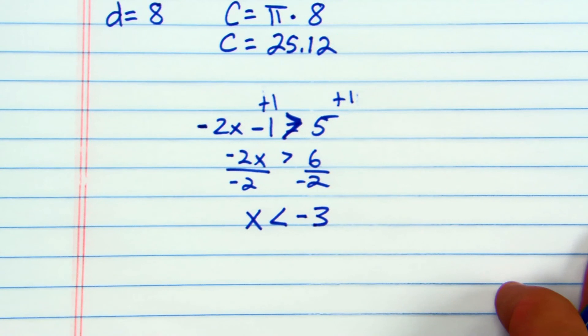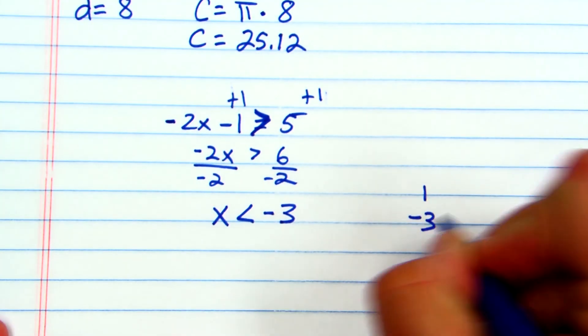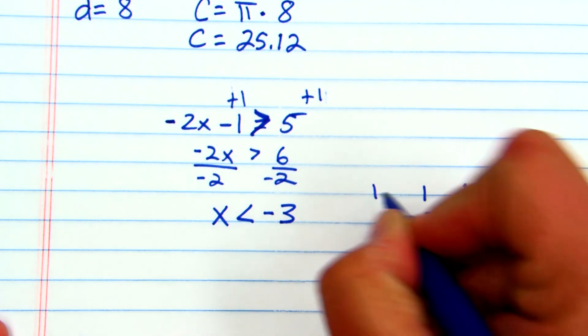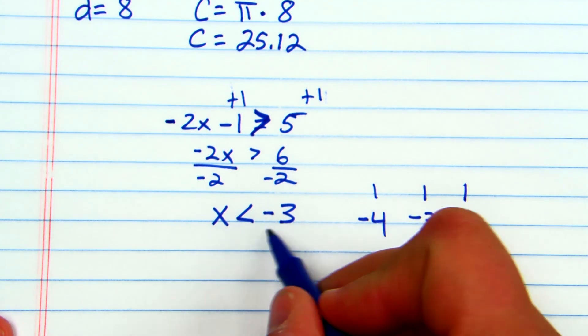Now to graph that equation, I'll come over here. I'm going to put negative 3 in the middle. To the right, we're going to get bigger. So that would be negative 2. To the left would be negative 4. That's plenty enough.